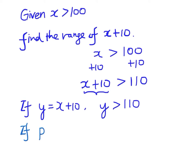And again we should start with the original inequality. x is greater than 100, and if we multiply both sides by 5, we have 5x greater than 500.